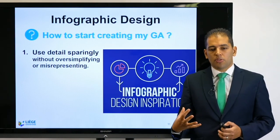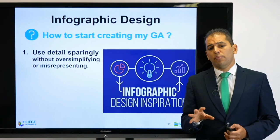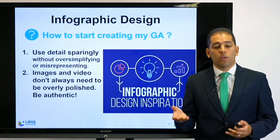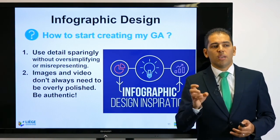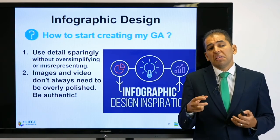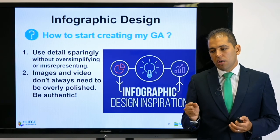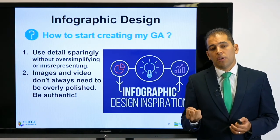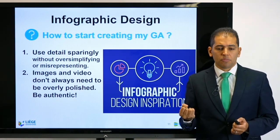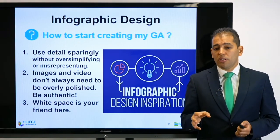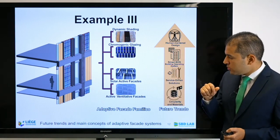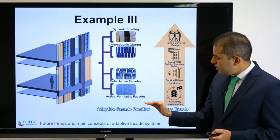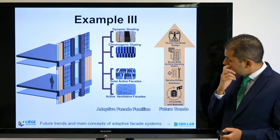How to start creating my graphical abstract? Use detail sparingly without oversimplifying or misrepresenting your work. Images and videos don't always need to be overly polished, so try to be authentic. Make sure that the image is your own — you might take some images from your own results if relevant, but if not, you have to produce a fully new graphical abstract or new image. White space is your friend here. Make sure you have white space. This is another example of one of my abstracts — we have enough white space, and we have highlighted the main elements of our research with keywords and some prospective future work.